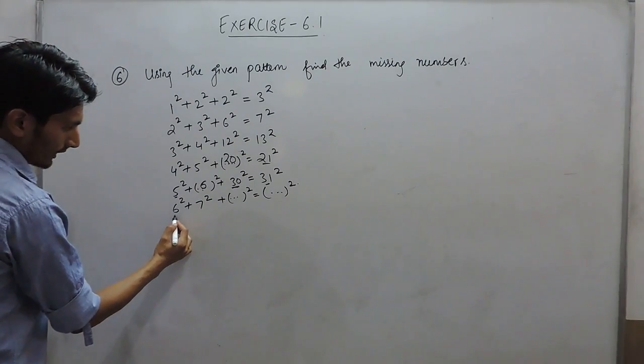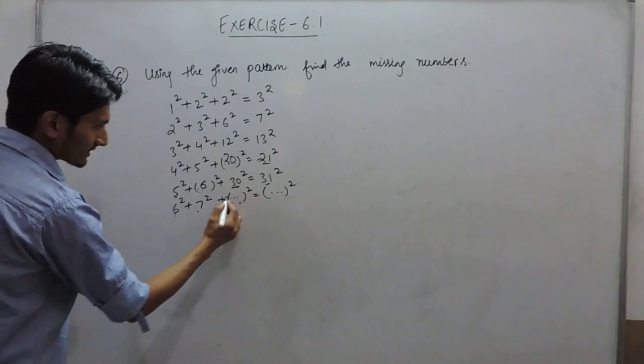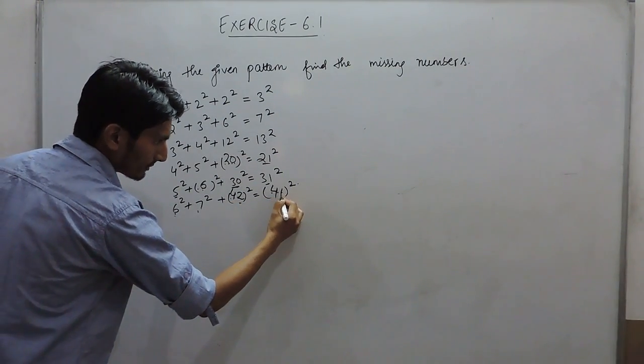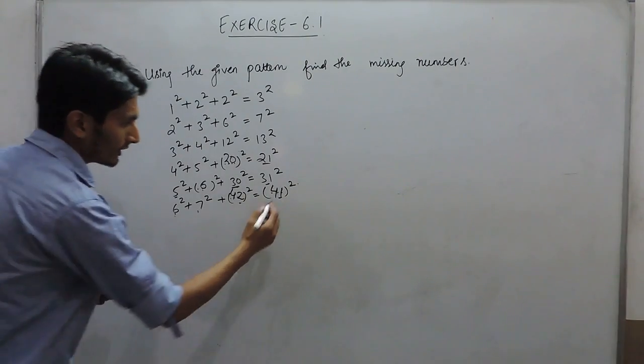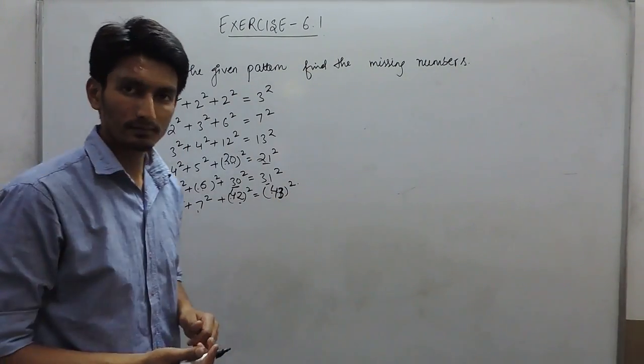Here also to find this we have to multiply these. 6 times 7 is 42, and this number must be 1 more. So this must be 43. Thank you.